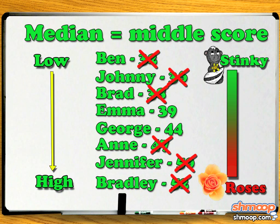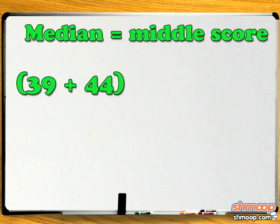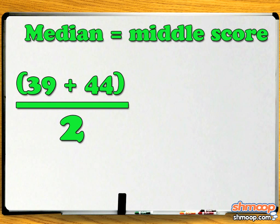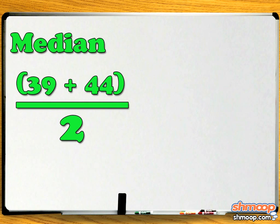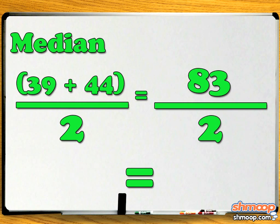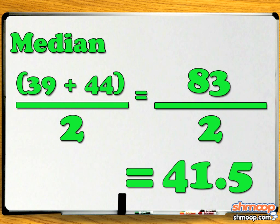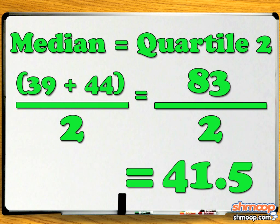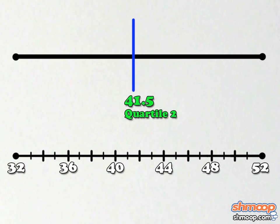But uh-oh — because we have an even amount of data, there are two middle numbers: 39 and 44. So to find the true middle number, we add the two middle numbers together and divide by 2 to get the median. 39 plus 44 equals 83, and 83 divided by 2 equals 41.5. Another way of saying the median is Quartile 2.